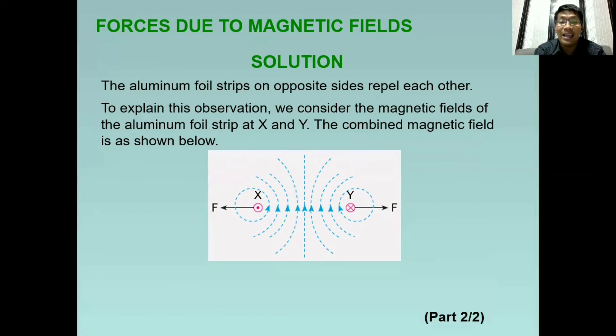doon or na form, it's moving counterclockwise, while for the Y side it is moving clockwise. That's why with that we have opposite direction of magnetic field, and again if they are opposite they will repel each other. So